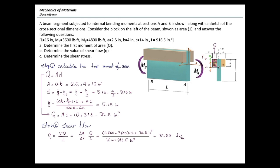This problem doesn't ask for the balancing force, but if it did: knowing that the force is 31.24 pounds per inch and the beam length is 16 inches, multiplying by L gives the total balancing force that must be transferred from the left segment to the rest of the section.